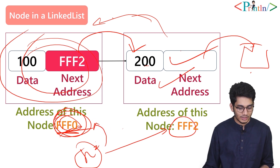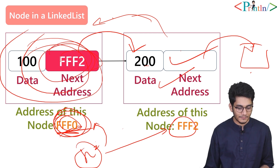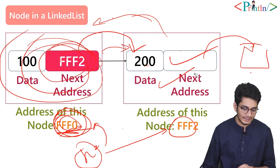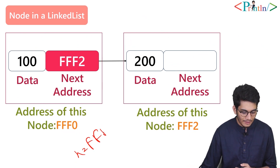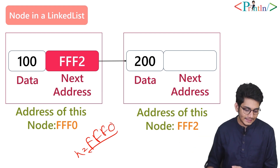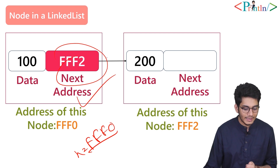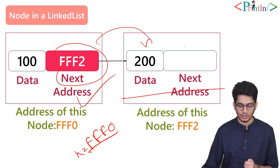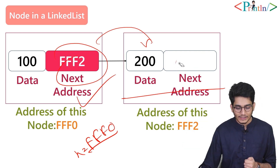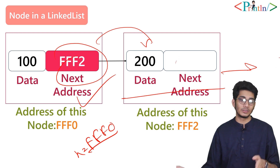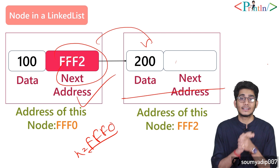We store the address of the first node in head because in a linked list you cannot go backwards during traversal. During access, we go to the first node via head, get the next address fff2, then traverse to that node, and so on. When we encounter null, we terminate the traversal.